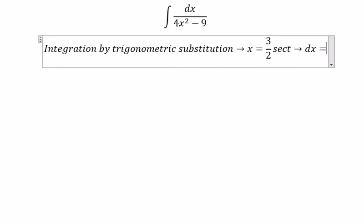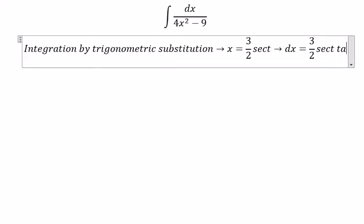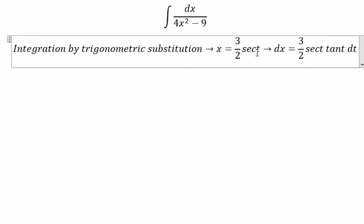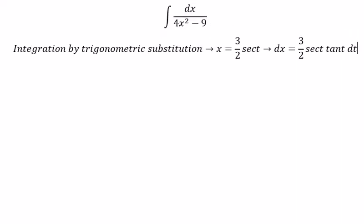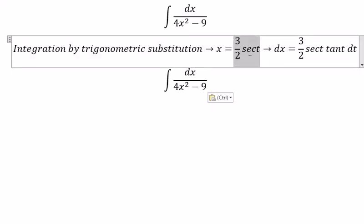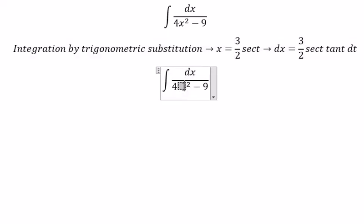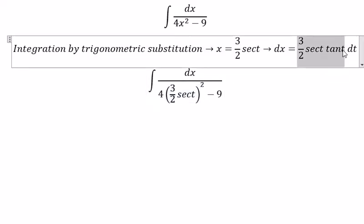dx we got about 3 over 2 secant of t times tangent of t dt, so we put this one in here. dx we put this one.